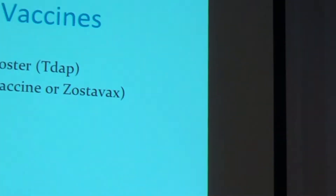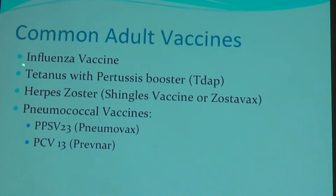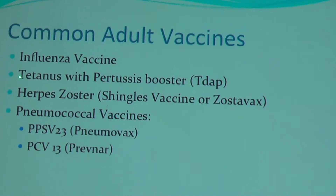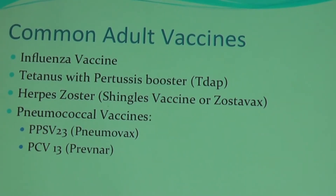Here's a list of common adult vaccines I deal with on a daily basis as a general internist. There's the annual influenza or flu shot, which comes out in the fall every year. There's a booster vaccine called Tdap, which contains tetanus and pertussis. Then there's the herpes zoster or shingles vaccine — brand name Zostavax. And then we also have vaccines that prevent disease caused by pneumococcal or pneumonia bacteria.